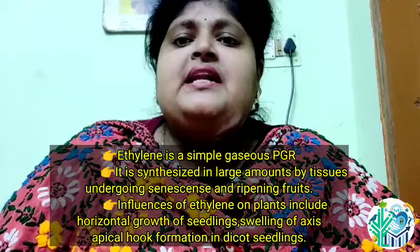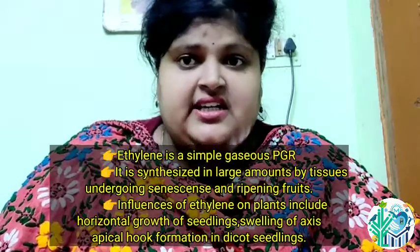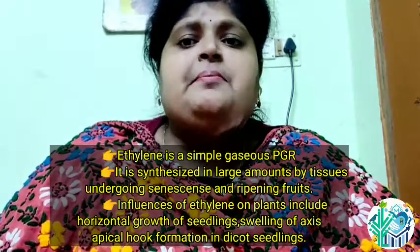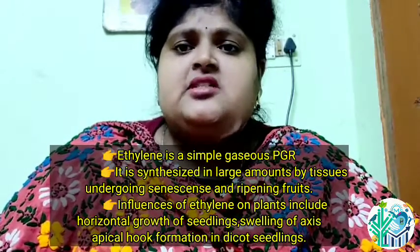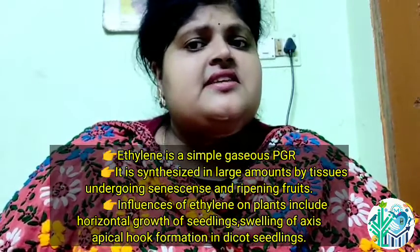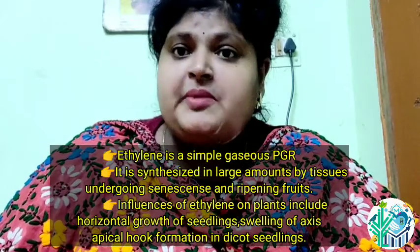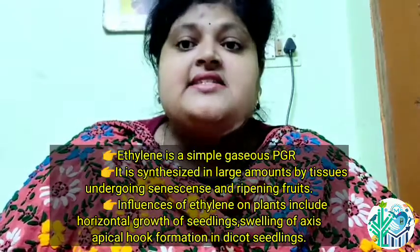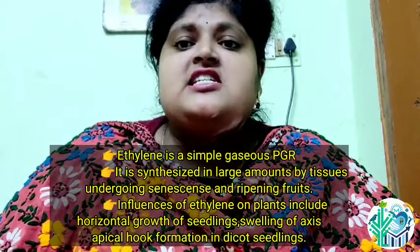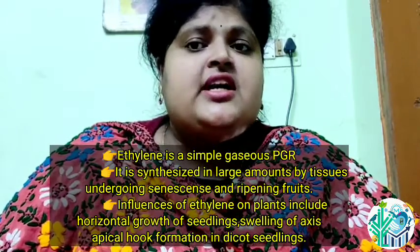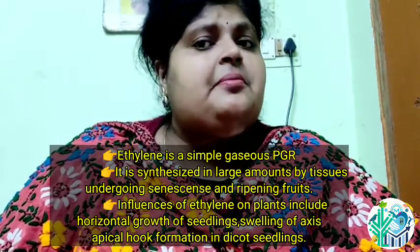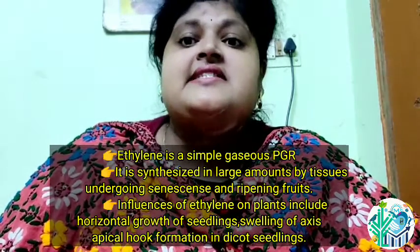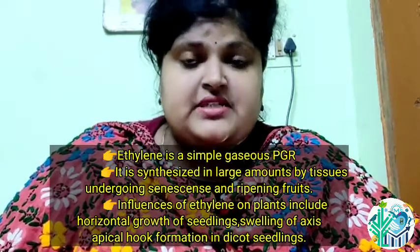Ethylene is a simple gaseous PGR. It is synthesized in large amounts by tissues undergoing senescence and ripening fruits.